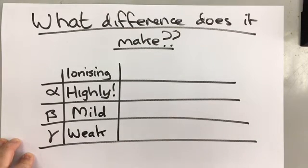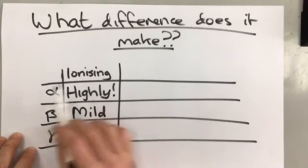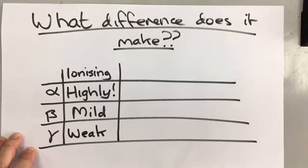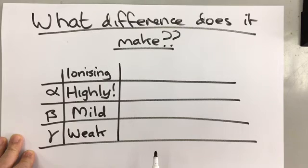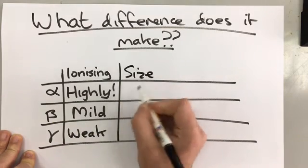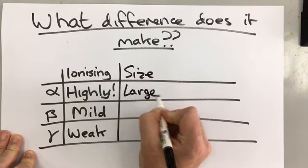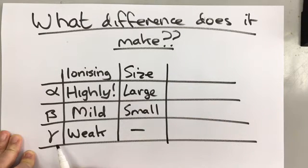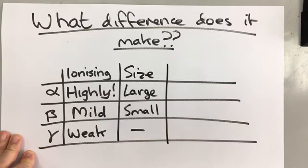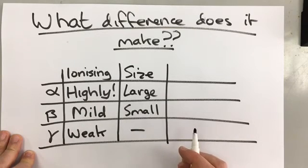The other thing that we need to think about is their size. We know that alpha is the most dangerous, it can cause the most damage to our cells, and that gamma is the least. But we also know that alpha is the largest. If we have the size here, large, small, no size at all for the gamma, because it's just pure energy. The reason that that matters is because large things can get stopped much more easily.